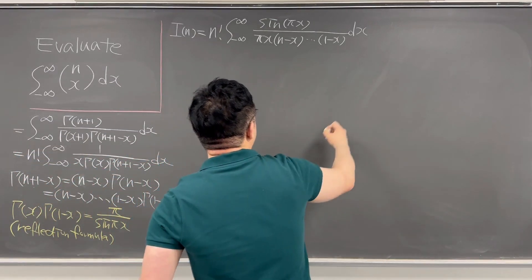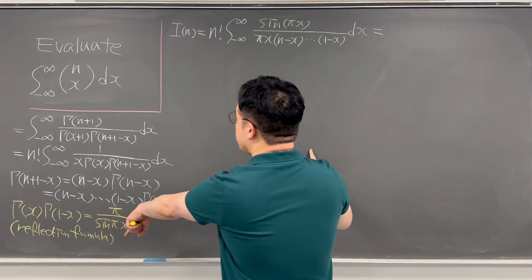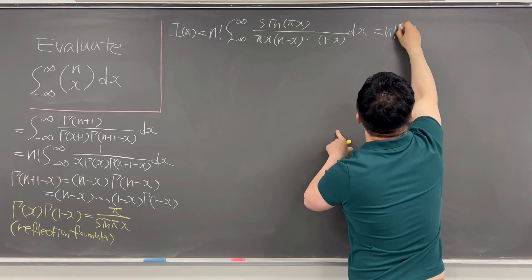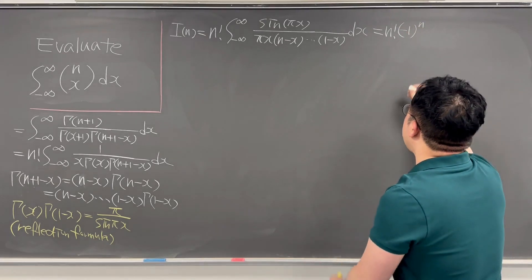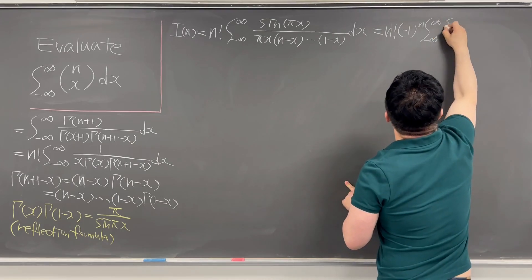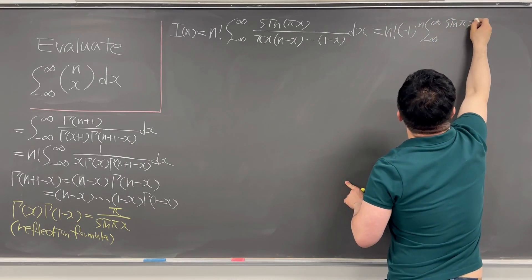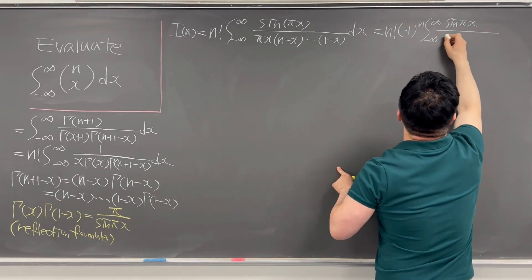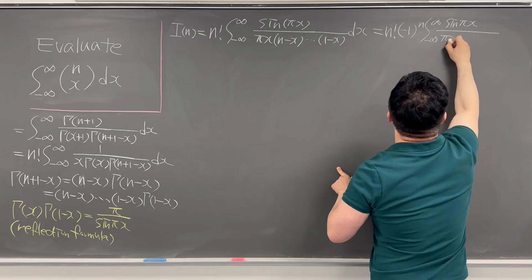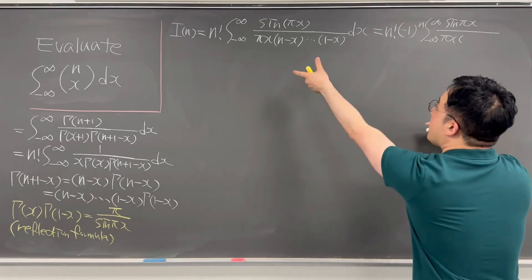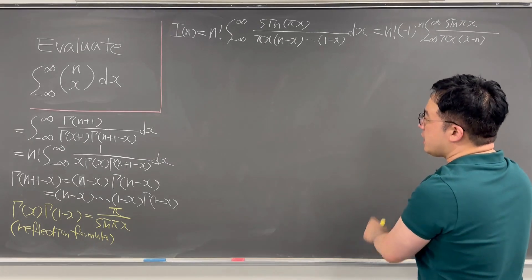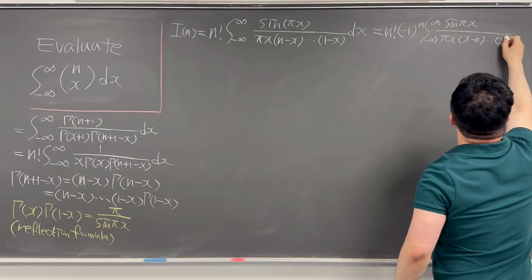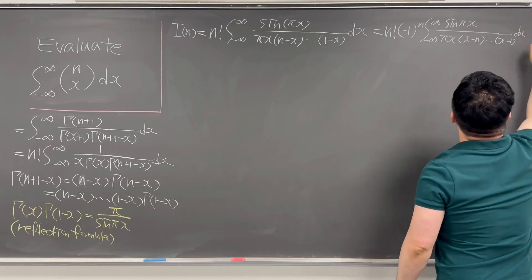This can be rewritten as n factorial times (-1)^n times the integral from negative infinity to infinity of sin(pi·x) in the numerator, and the denominator is pi·x times (x-n) times all the way up to (x-1), dx — switching the sign of the factors.